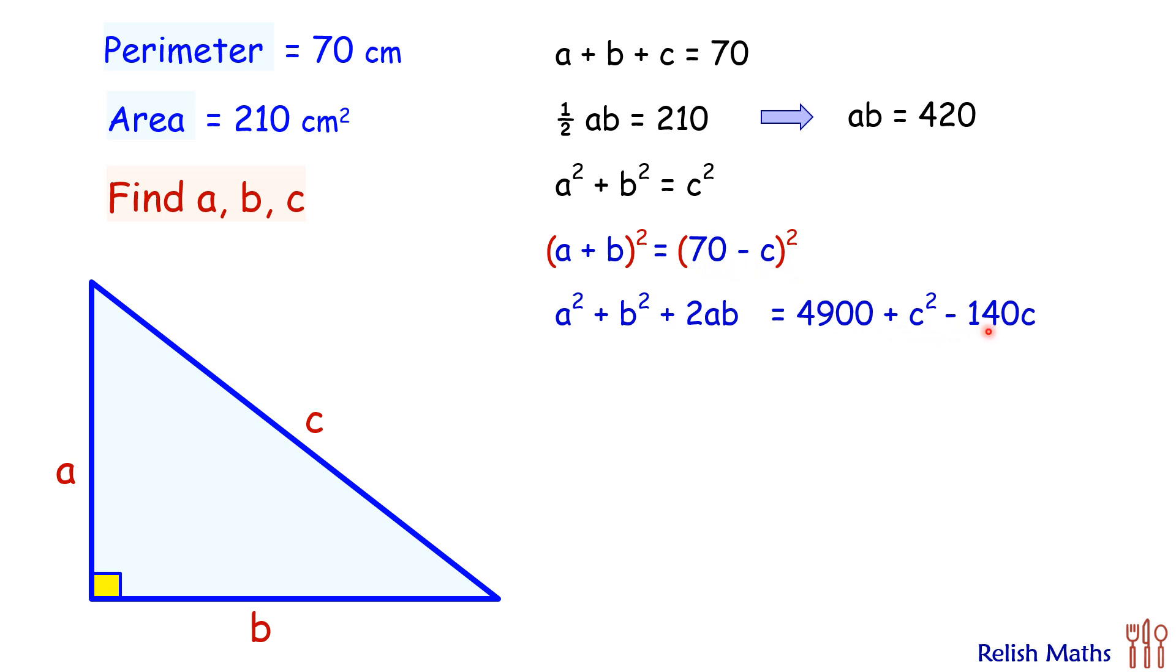Now here, a squared plus b squared we know is c squared, so replacing it, and a times b is 420, so 2 times ab will be 840. Solving this equation, we get c squared canceled on both sides.